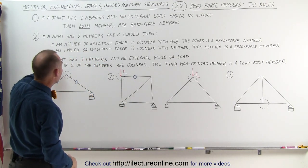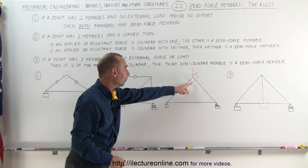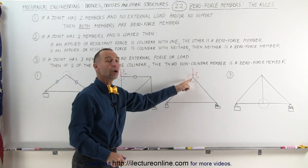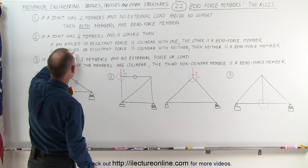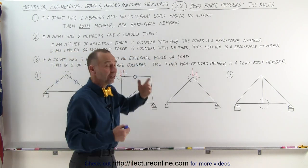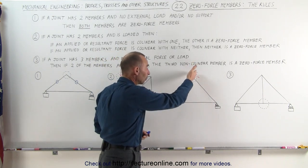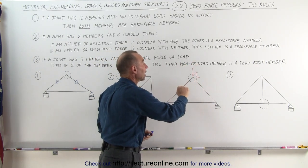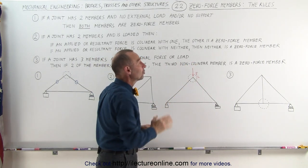The second case, again, we have a joint here with two members and a load, but in this case, if an applied or resultant force is collinear with neither, in this case you can see that it's not collinear with this one, it's not collinear with that one, then neither is a zero force member.